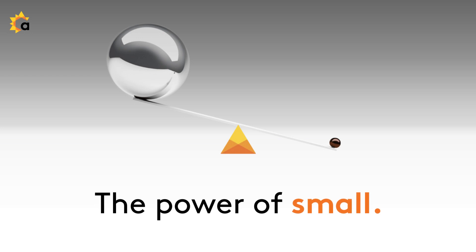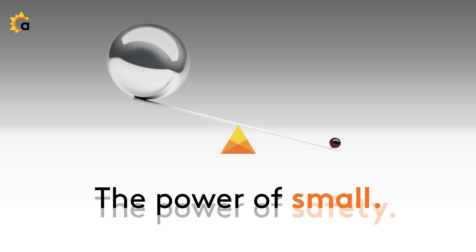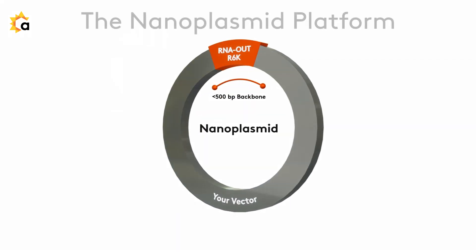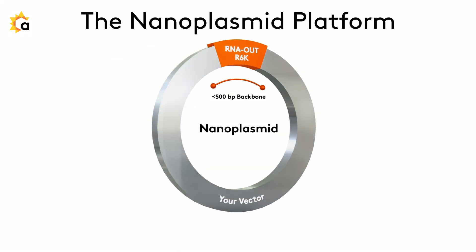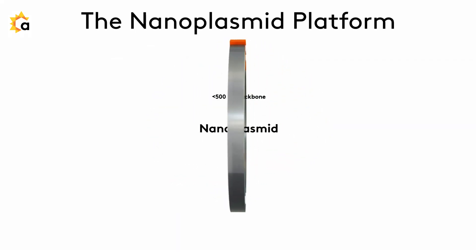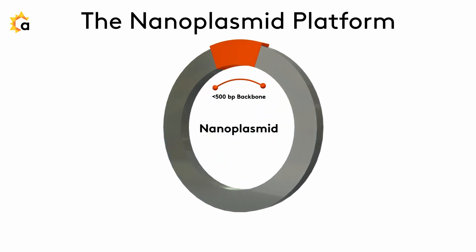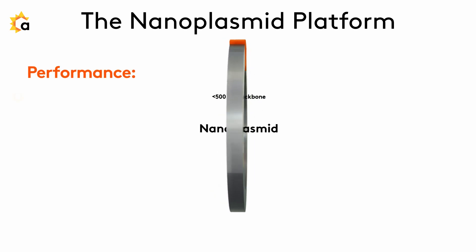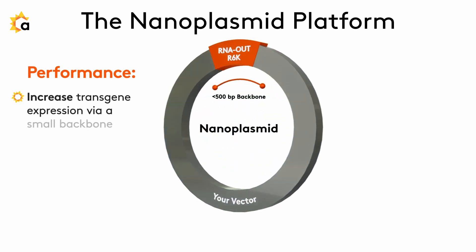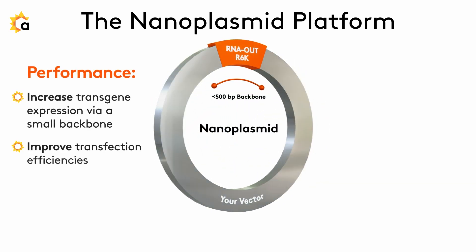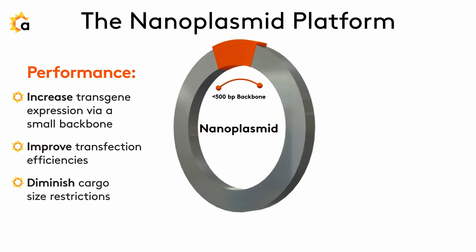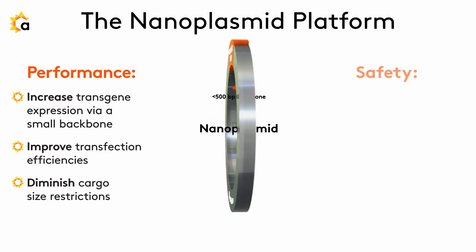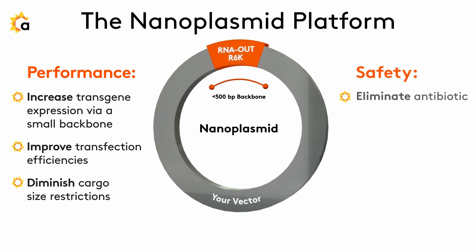Discover the power of small. Discover the power of safety. NanoPlasmid, our unique vector platform, provides significant benefits for cell and gene therapy applications. With its unique smaller backbone, NanoPlasmid offers increased gene expression, improved transfection efficiencies, and diminished cargo size restrictions. Use NanoPlasmid to put your research on the path of least resistance.